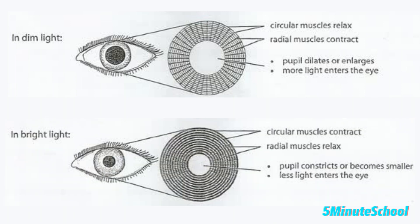When there is bright light, less light is allowed to enter, so the circular muscles contract in order to close the iris. This makes the pupil smaller, meaning less light can enter into the eye.